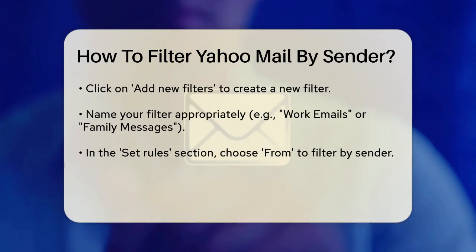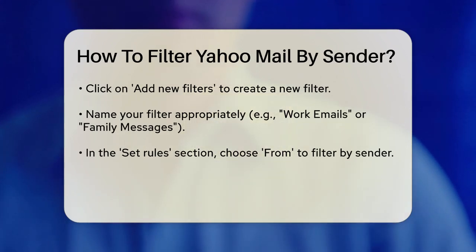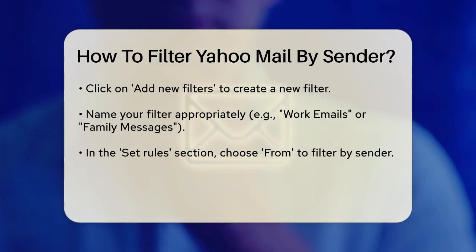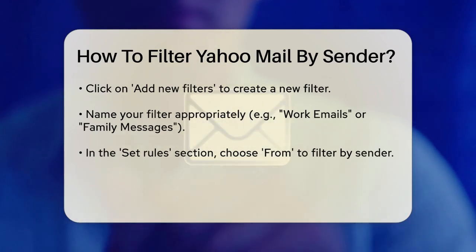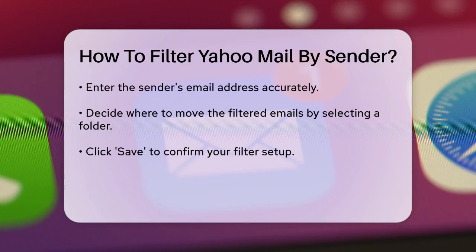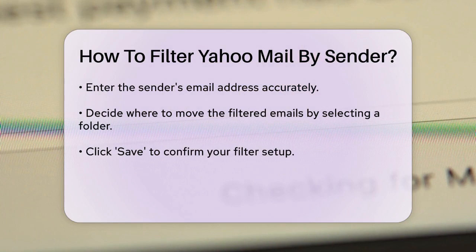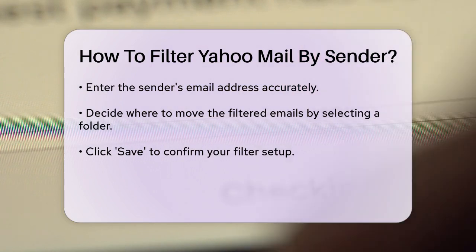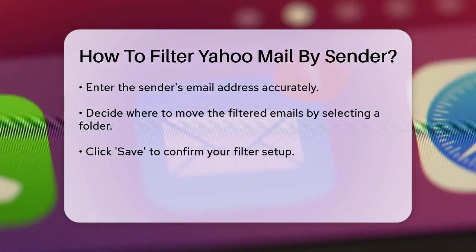Next, you need to decide where you want these filtered emails to go. At the bottom of the page, you'll see an option to choose a folder. Select an existing folder or create a new one where you want these emails to be moved. Once you've set up your filter, click Save at the top. You'll see a brief message confirming that the filter has been saved.